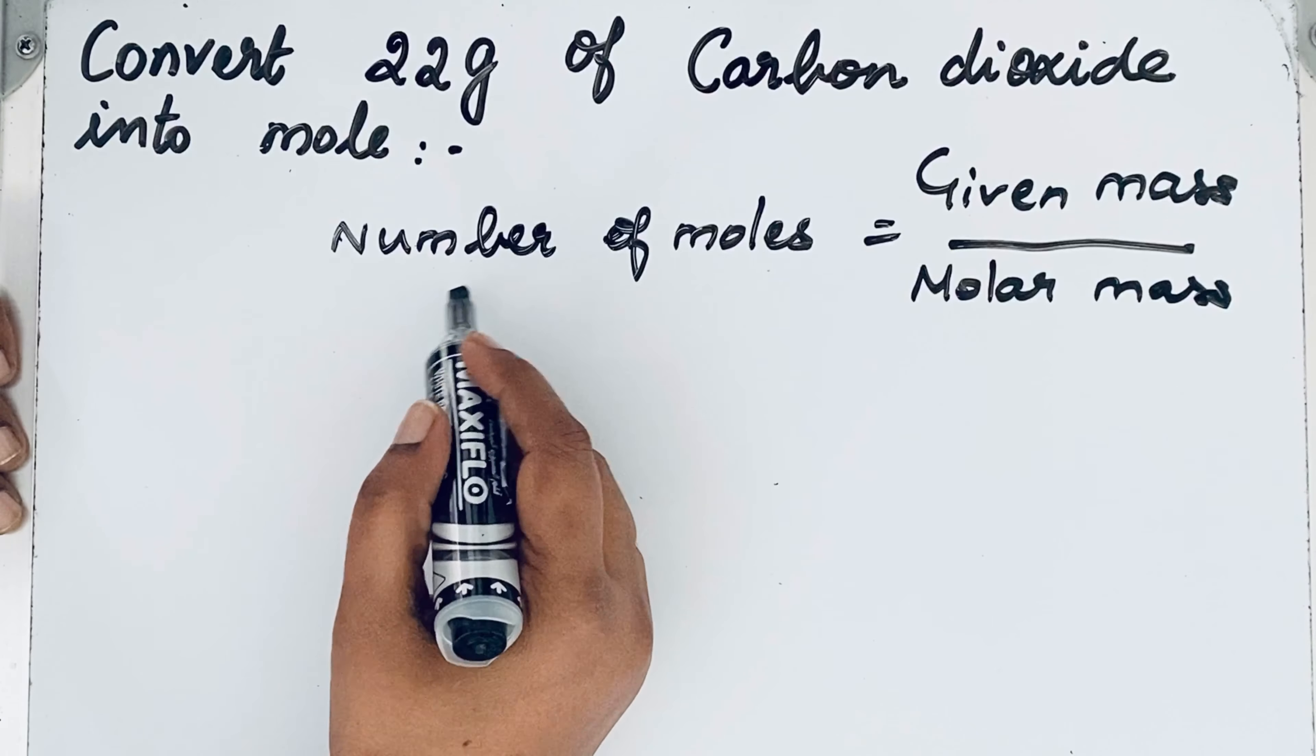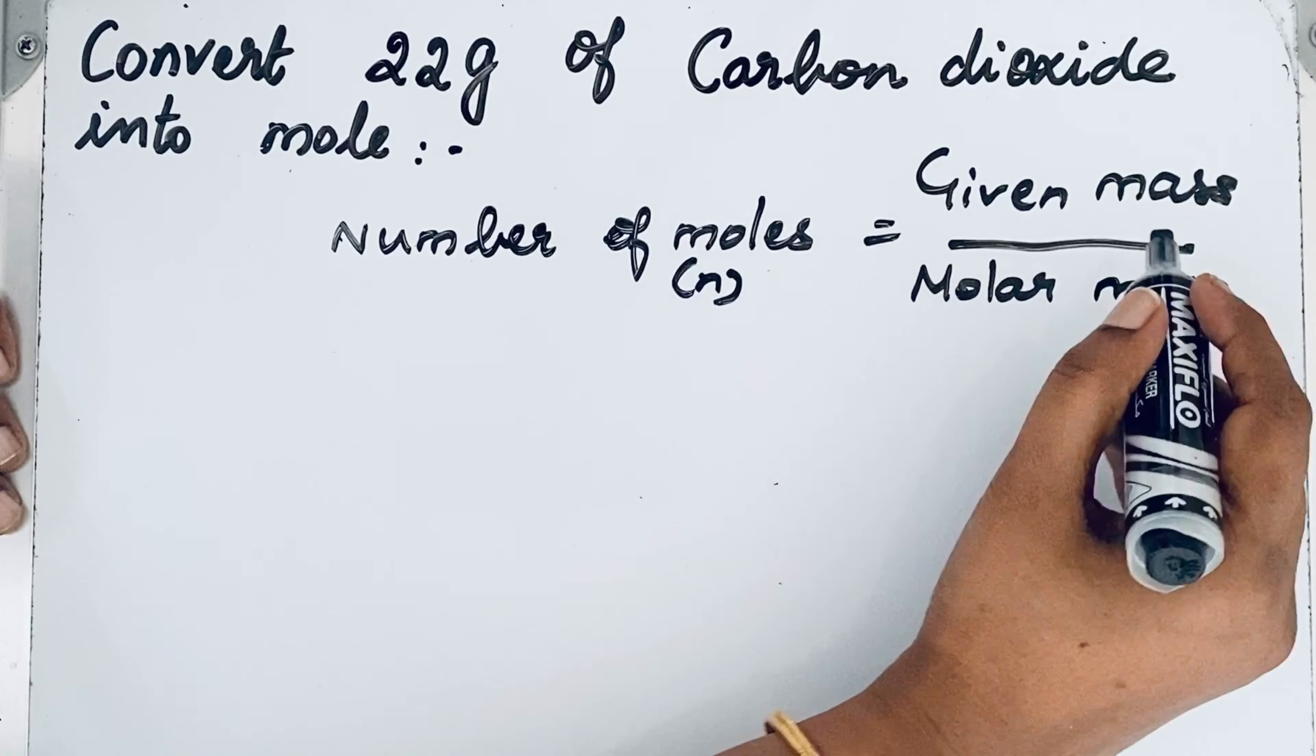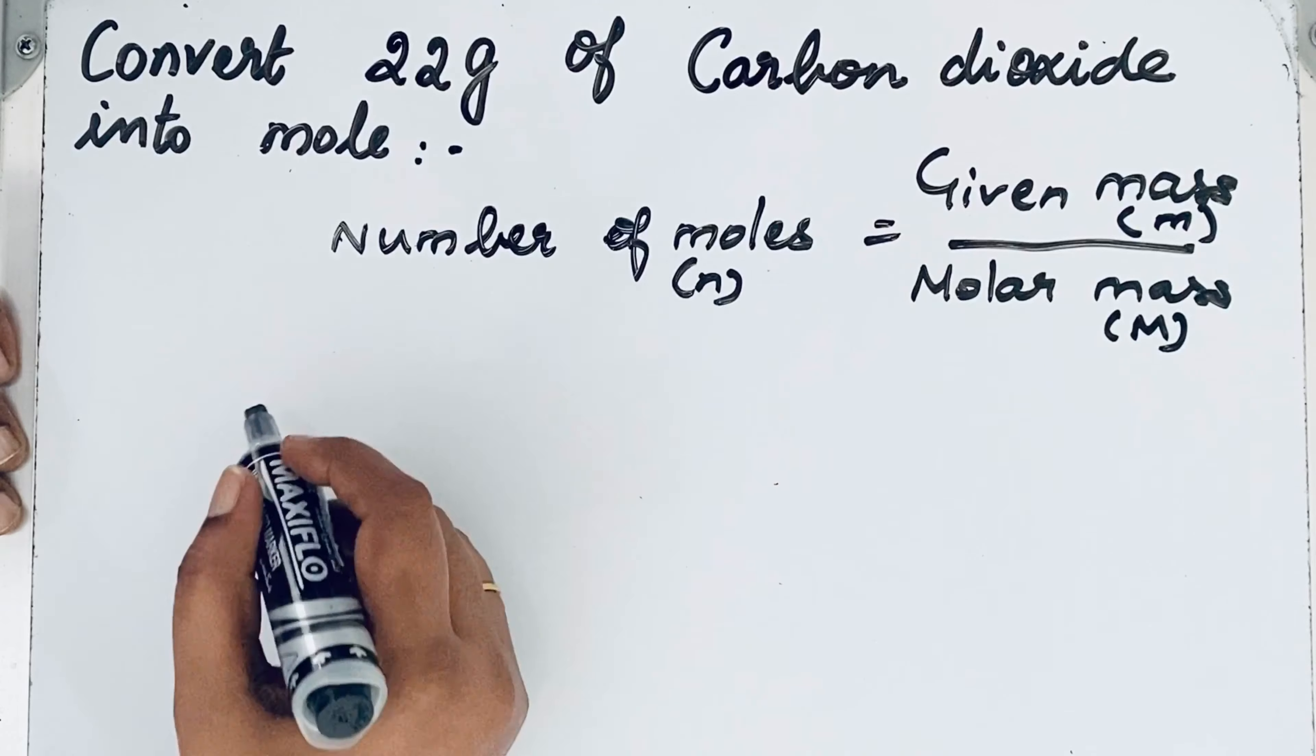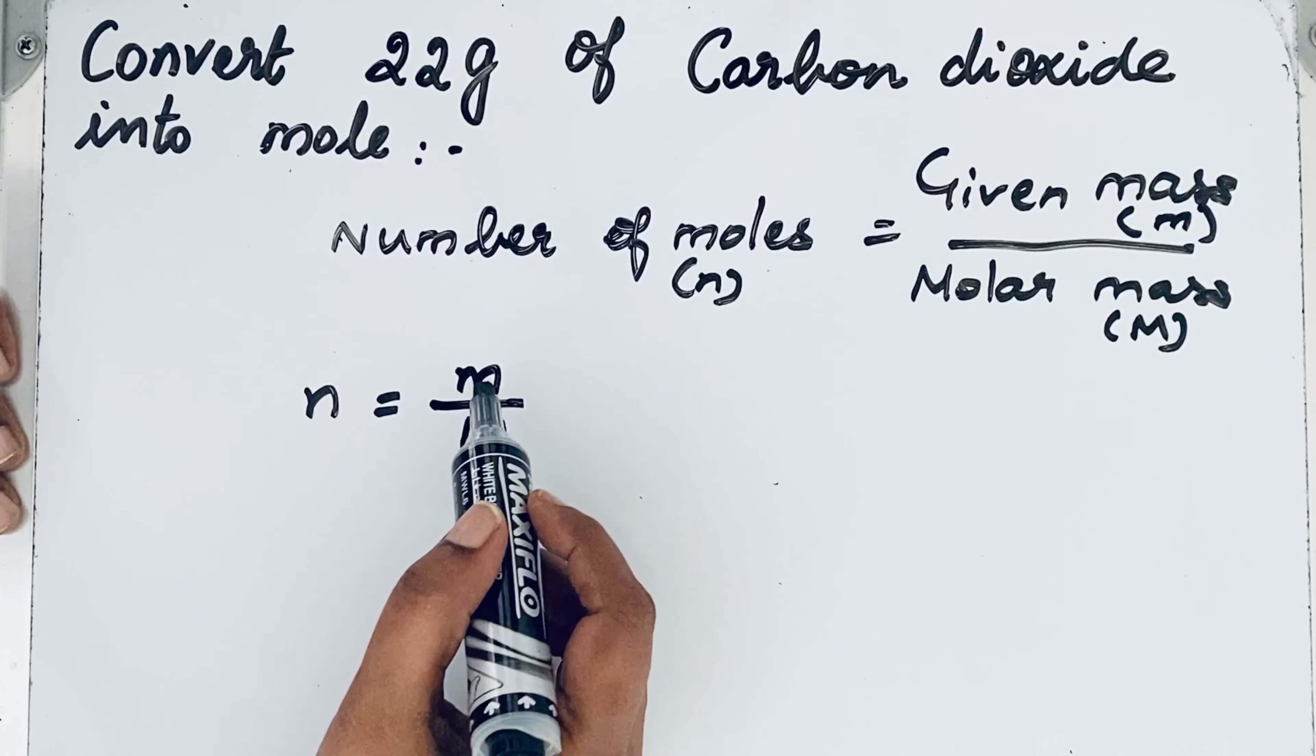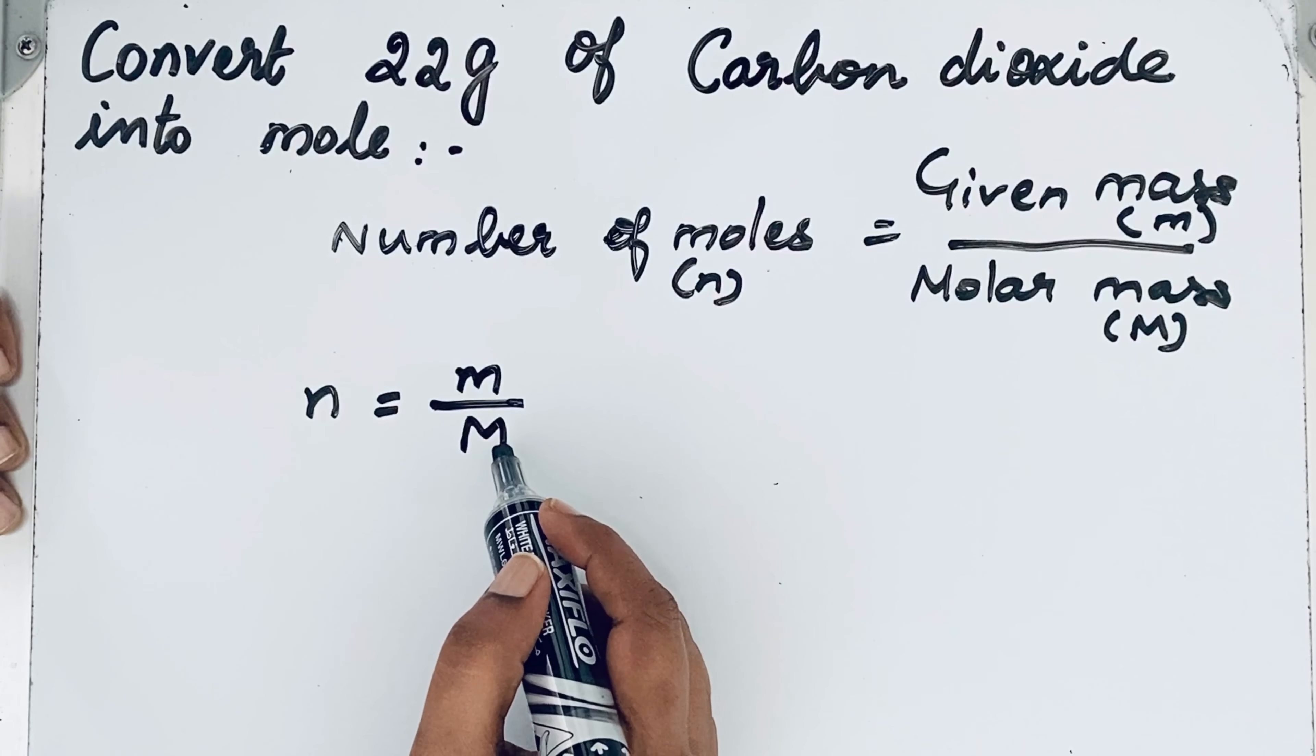This only we are going to find out. So this we can represent like n, then given mass m, this is capital M. So let us write n equals m by M. So m is given, it is like 22 gram, but M, that is molar mass, is not given.